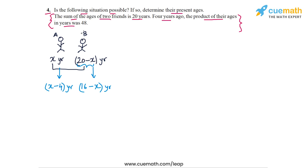And now we are also told that 4 years ago, the product of their ages was 48. So x minus 4 times 16 minus x, this product has to be 48. So here's our equation: x minus 4 times 16 minus x equal to 48. And we need to figure out whether real roots exist for this equation or not. And that will tell us whether this situation is possible or not.